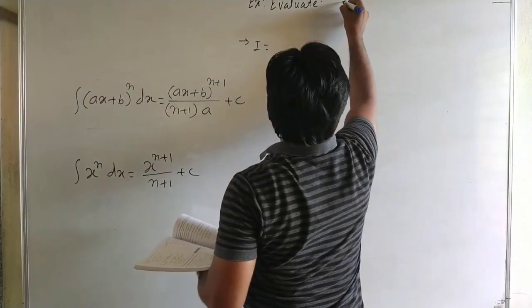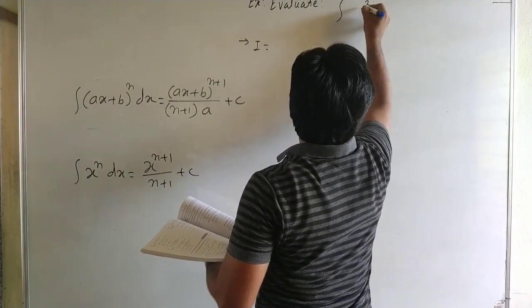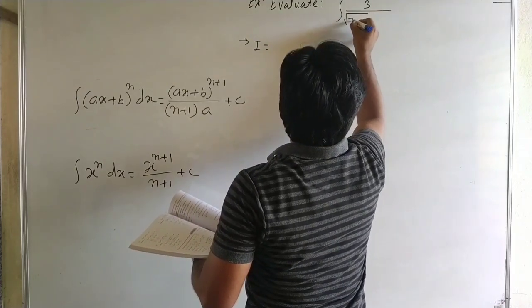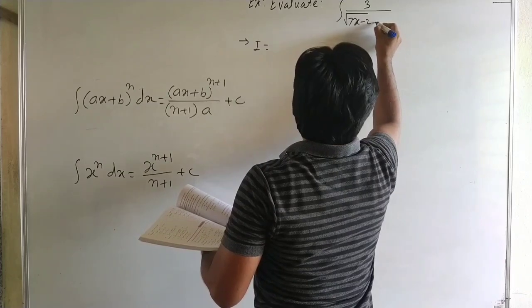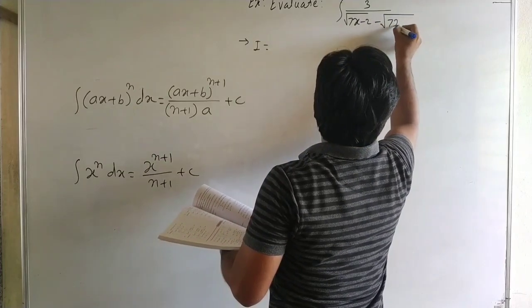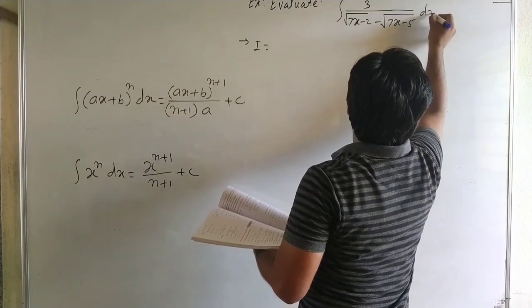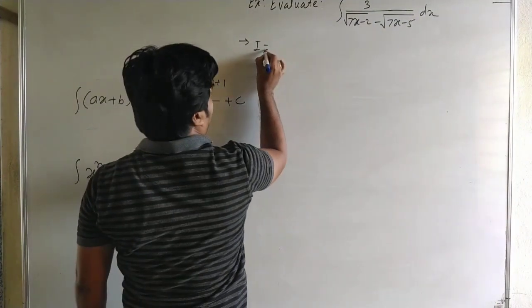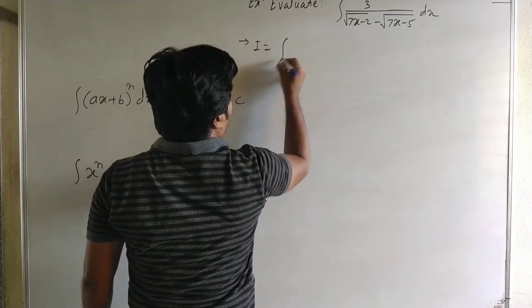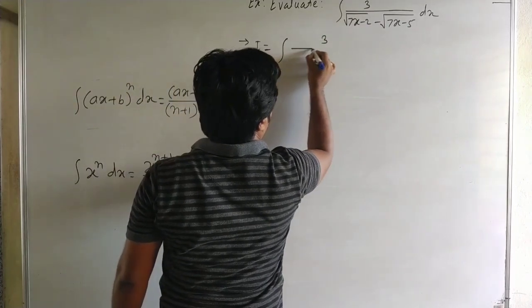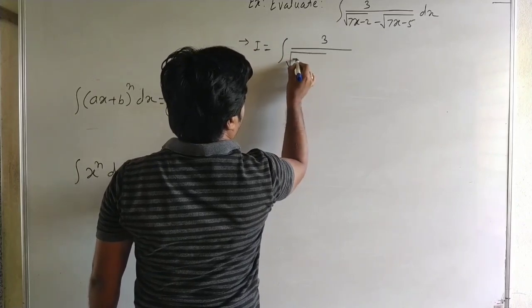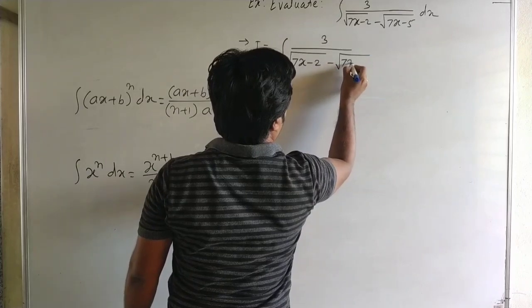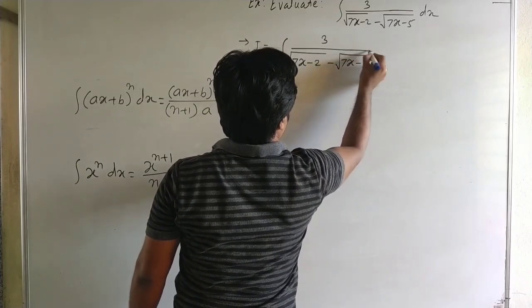Next example: evaluate the integral of 3 upon under root of 7x minus 2 minus under root of 7x minus 5 dx. Here again it is the same procedure.